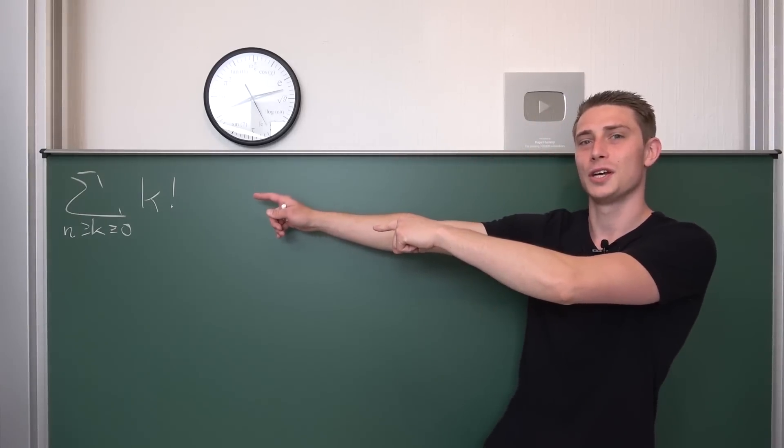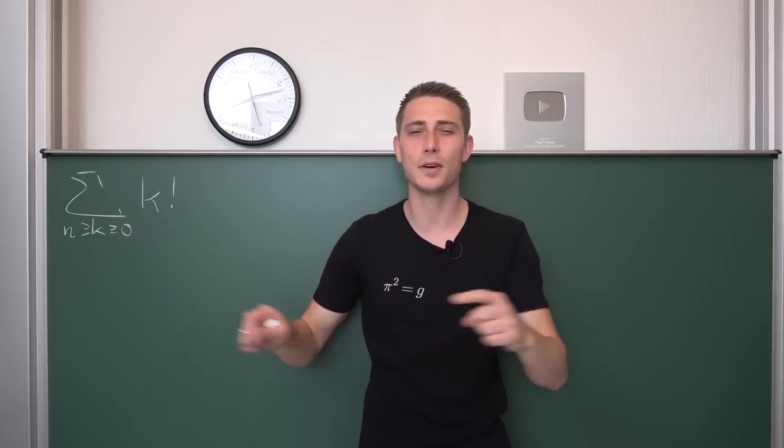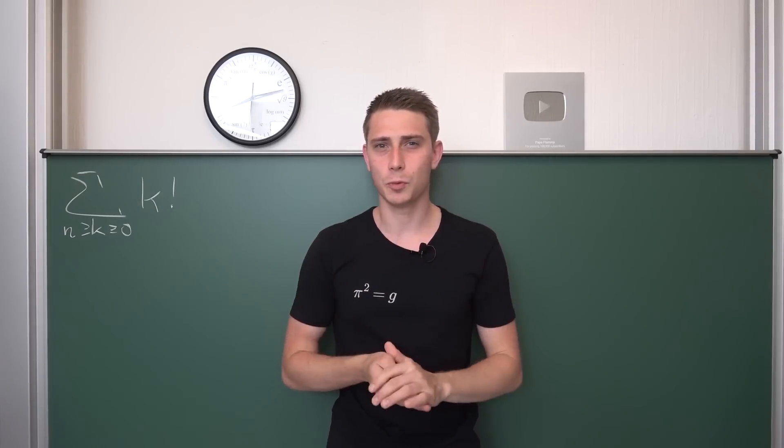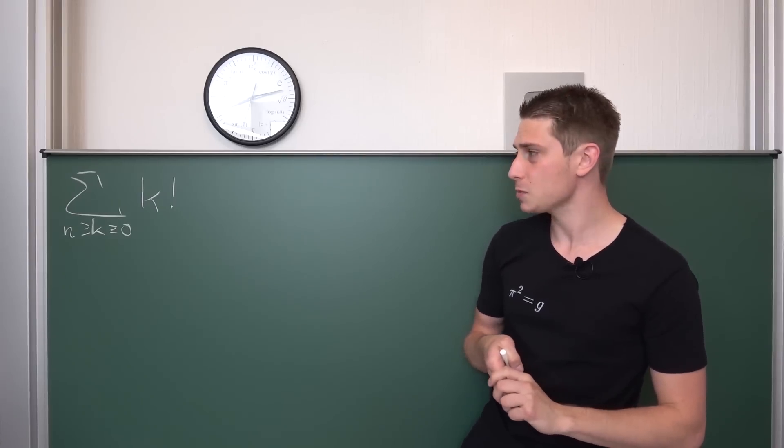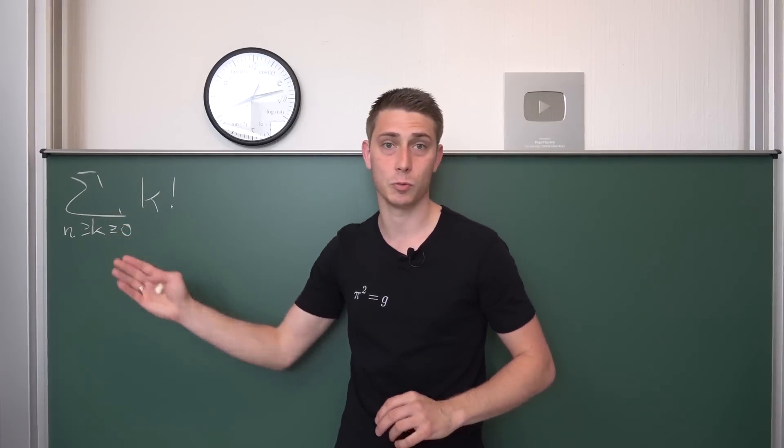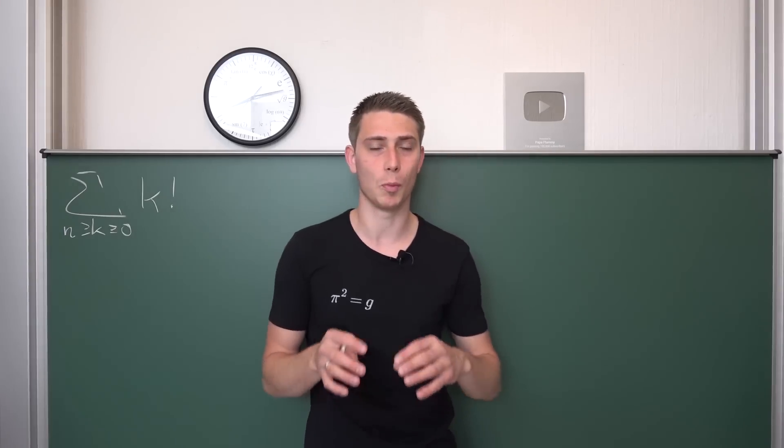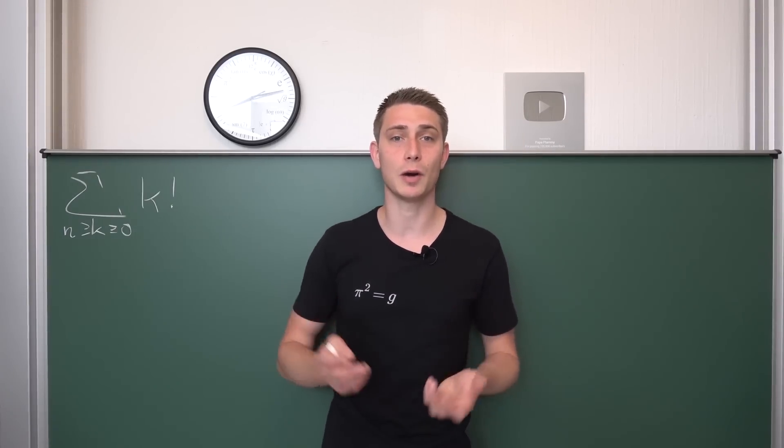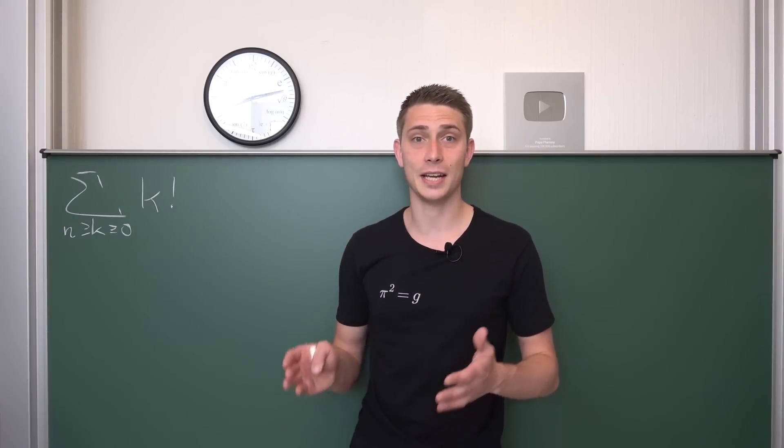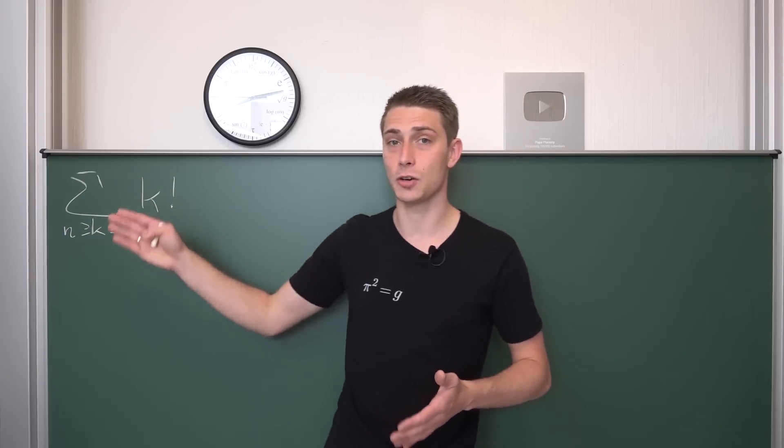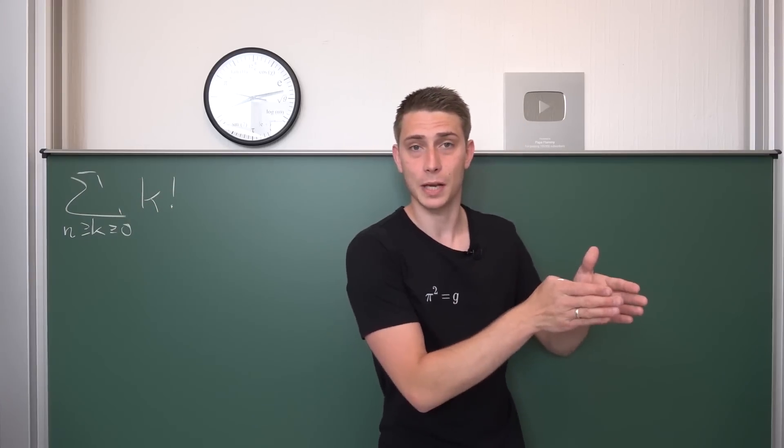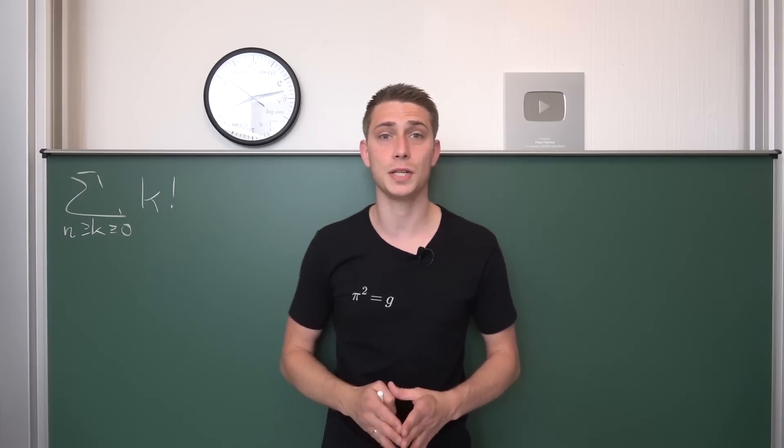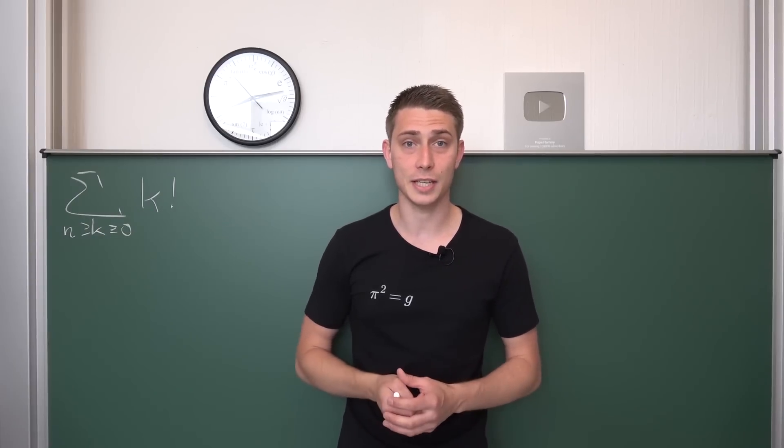We are going to check out this thing today, the sum of factorials. Many of you probably have never thought about something like this because it really doesn't look like it would allow for some kind of closed form or a nice expression at the end, but there actually is. What we are going to derive today is instantly an analytic continuation of this thing for the whole complex plane on the right, real part of n in this case being greater than zero.